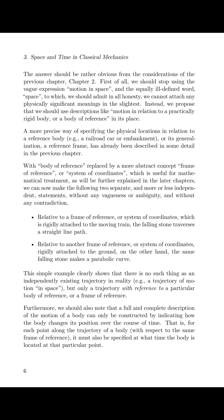A more precise way of specifying the physical locations in relation to a reference body — e.g., a railroad car or embankment — or its generalization, a reference frame, has already been described in some detail in the previous chapter. With body of reference replaced by the more abstract concept of frame of reference, or system of coordinates, which is useful for mathematical treatment, as will be further explained in the later chapters, we can now make the following two separate and more or less independent statements, without any vagueness or ambiguity and without any contradiction.